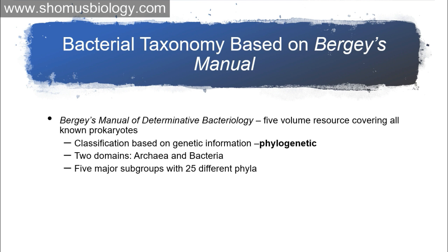Bacterial taxonomy is based on Bergey's Manual. Microbial classification is very different from animal and plant classification, and the species concept of prokaryotes is also different from eukaryotes. Bergey's Manual of Determinative Bacteriology is a five-volume resource covering all known prokaryotes. It is like a database in a library where you can find a particular bacterial species and learn all known parameters and facts about it. It is updated on an almost daily basis.